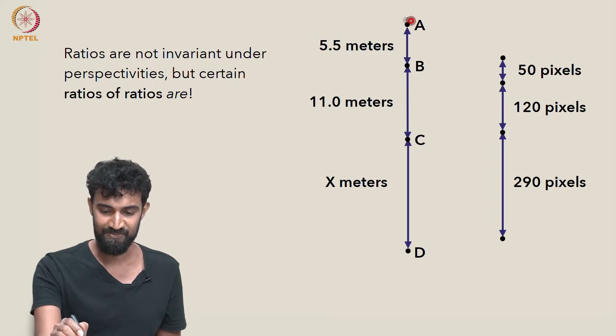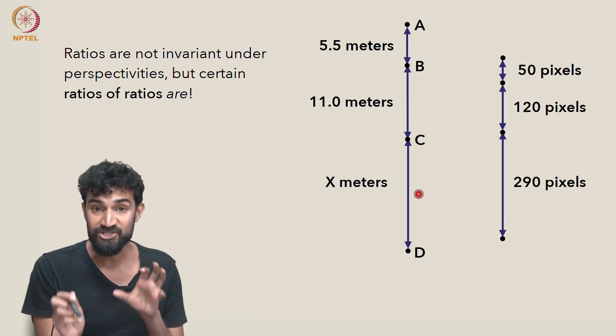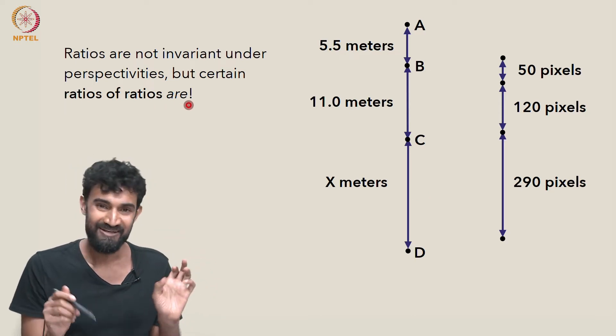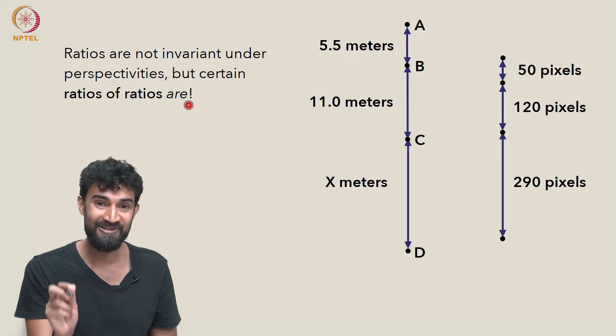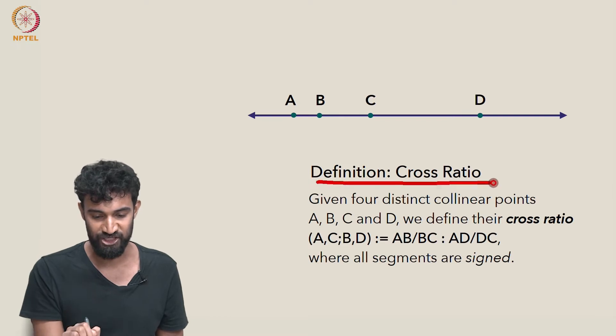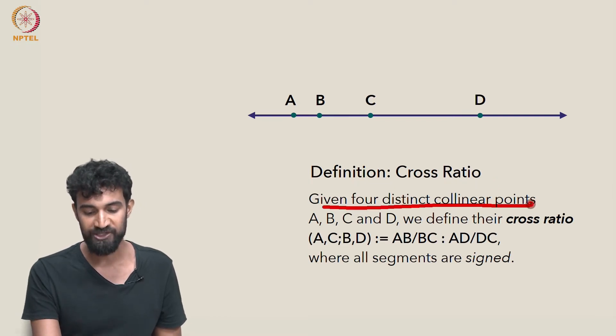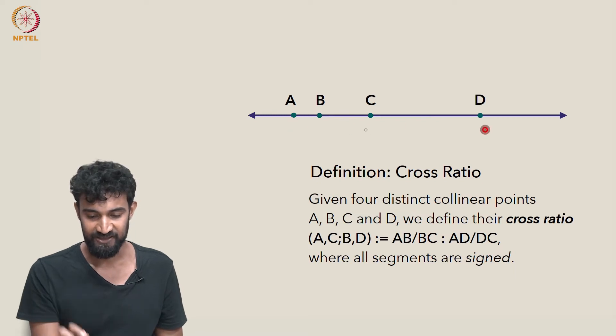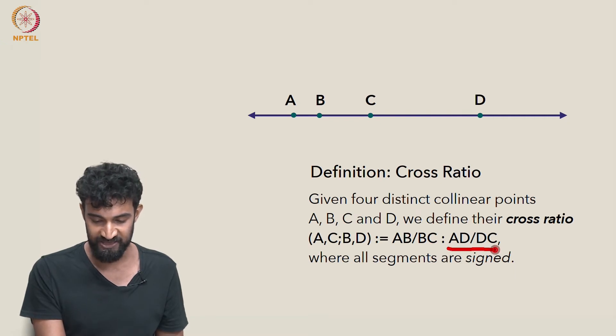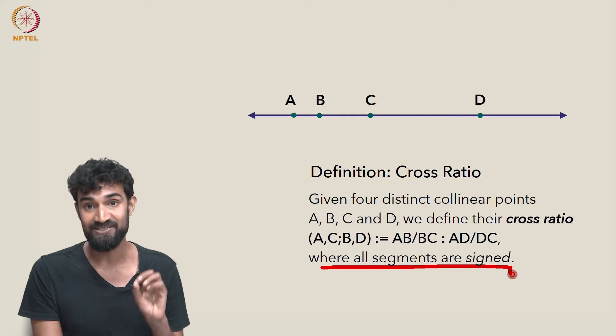So if we call this A, B, C, and D, we know that although these ratios are not preserved, there is a certain very special ratio of ratios that is preserved. Now just to be clear, not any ratio of ratios will be preserved. This is a highly specialized one that we're going to introduce now, and that's known as the cross ratio. So given four distinct collinear points, A, B, C, and D, we can define their cross ratio, A, C, B, D, to be AB over BC divided by AD over DC, where all of these segments are signed lengths.